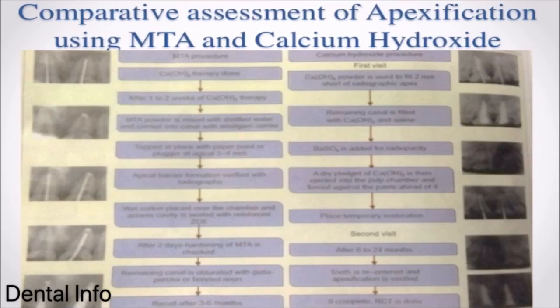Recall after 3–6 months. Calcium hydroxide procedure: First visit — calcium hydroxide powder is used to fill 2 mm short of the radiographic apex. Remaining canal filled with calcium hydroxide and saline. BaSO4 added for radiopacity. A dry pledget of calcium hydroxide is ejected into the pulp chamber and forced against the paste. Place temporary restoration. Second visit: After 6–24 months, tooth is re-entered and apexification is verified; if complete, RCT is performed.